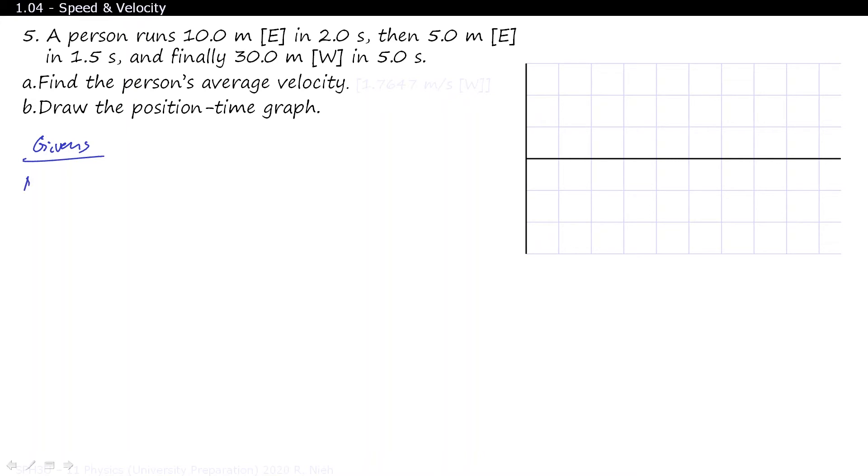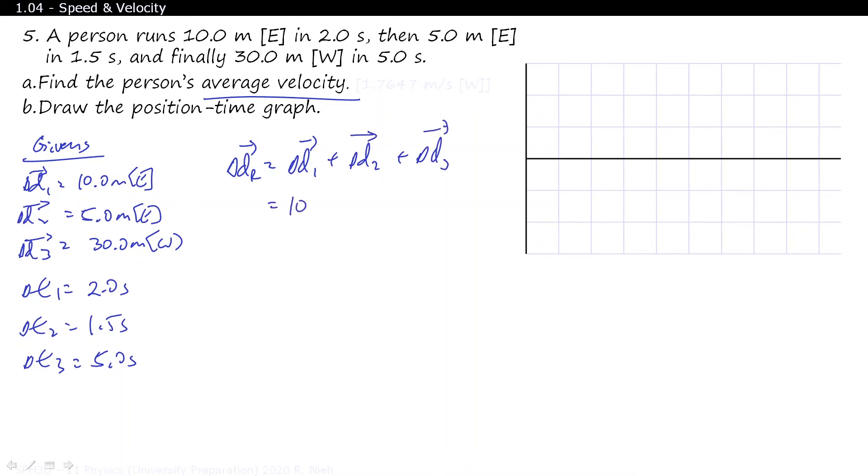We'll start off with our givens. To figure out average velocity, we need to figure out the total distance, or the total displacement, and divide it by the total time. So the total displacement equals D1 plus D2 plus D3. So 10.0 meters east, plus 5.0 meters east, plus 30 meters west, which is also equal to negative 10 meters west, minus 5 meters west, plus 30 meters west.